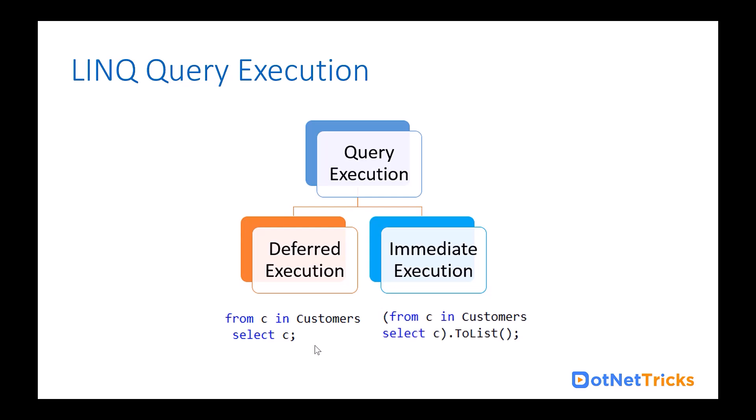With immediate execution, the query is executed right away when assigned to a variable — you get all the customers immediately in that variable. In immediate execution, the result set is stored in memory in the variable. In deferred execution, the result is not stored in the variable; it always returns real-time data from the database. Whenever you use the query variable, it fetches whatever data is in the database at that moment.